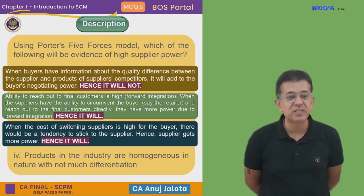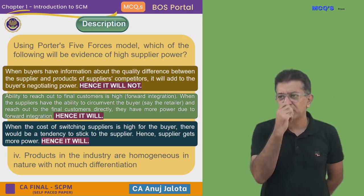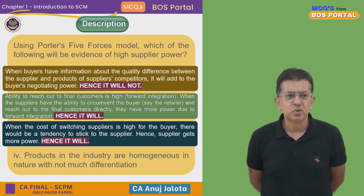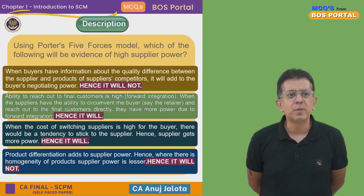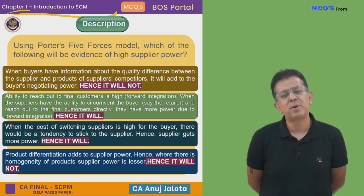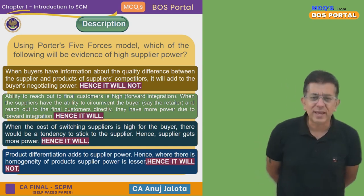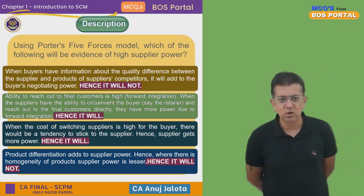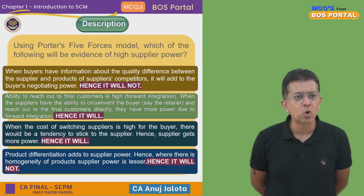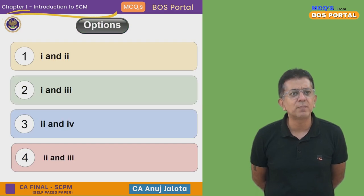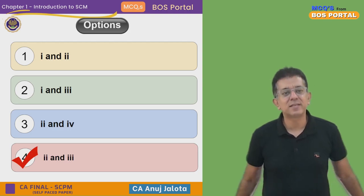My supplier knows he can usually charge me higher because he knows I will not switch. Option four: products in the industry are homogeneous with not much differentiation. If products are homogeneous, nobody will have high bargaining power — product differentiation adds to the supplier's power. With homogeneity, whether I purchase from this supplier or that supplier, the goods are the same, so it will not add to the supplier's bargaining power. Therefore, options two and three add to supplier power — the answer is option four.